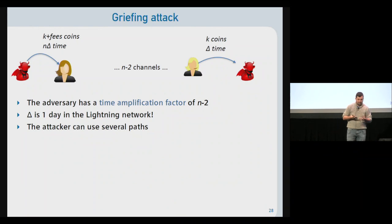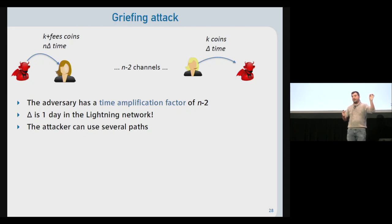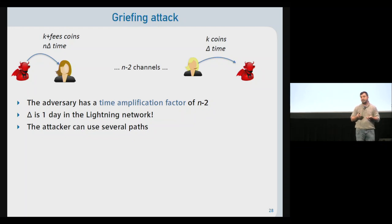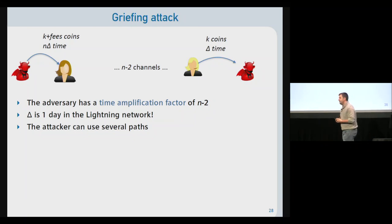In the Griefing attack, an adversary performs a payment to itself. The adversary locks k plus fees in the first hop for a time of n times delta, and the last hop locks k coins for time delta. This forces n minus two channels to lock coins for time proportional to their position in the path, giving the adversary a time amplification of n minus two. In the Lightning Network, delta is currently set to one day, so a seven-hop path locks coins for seven days — and the attacker can worsen this with longer paths or multiple simultaneous payments.